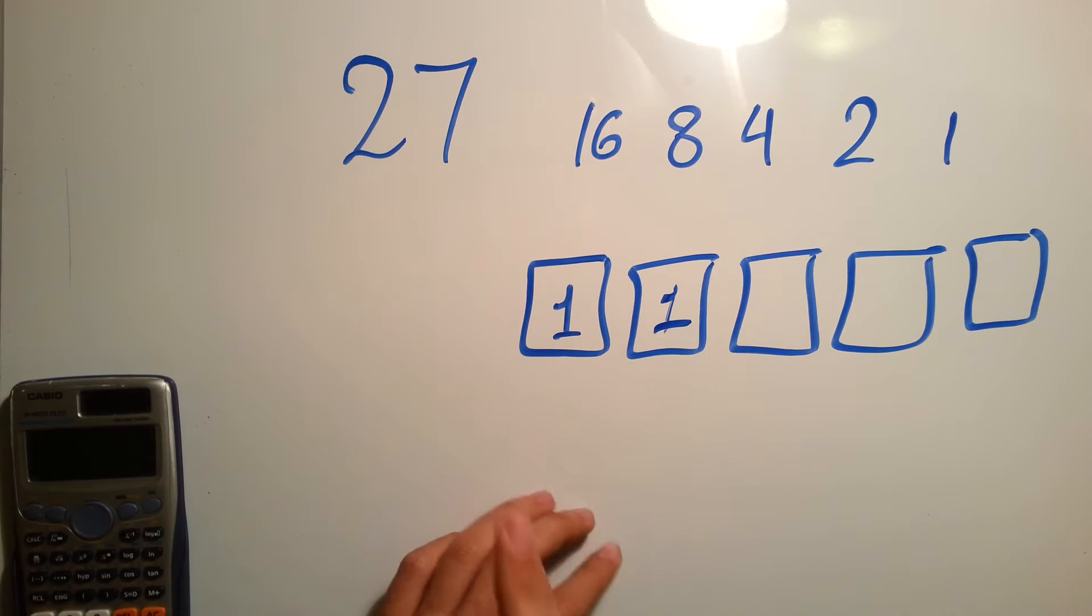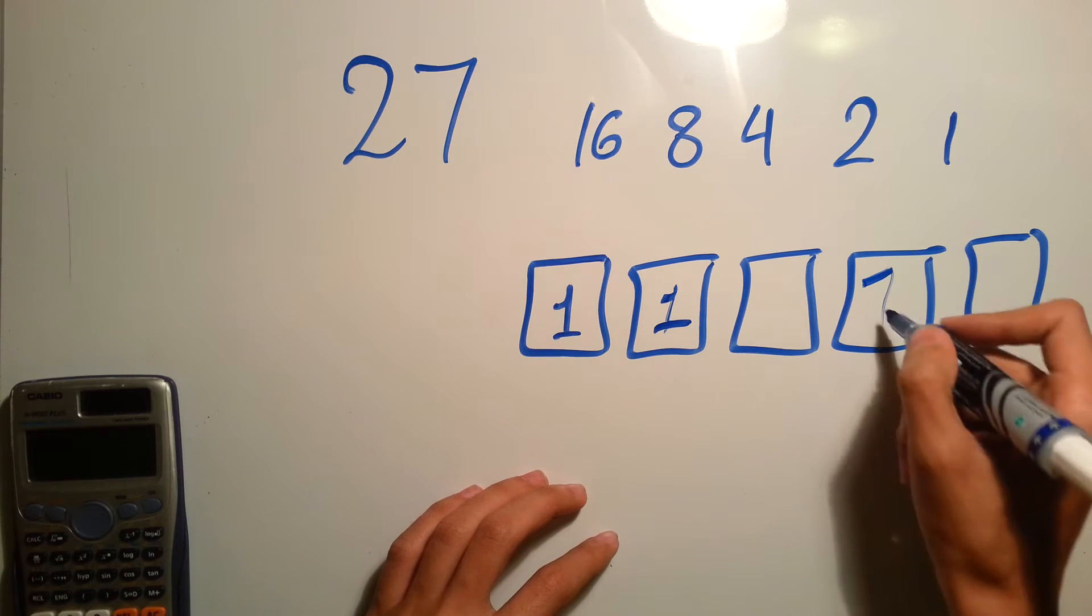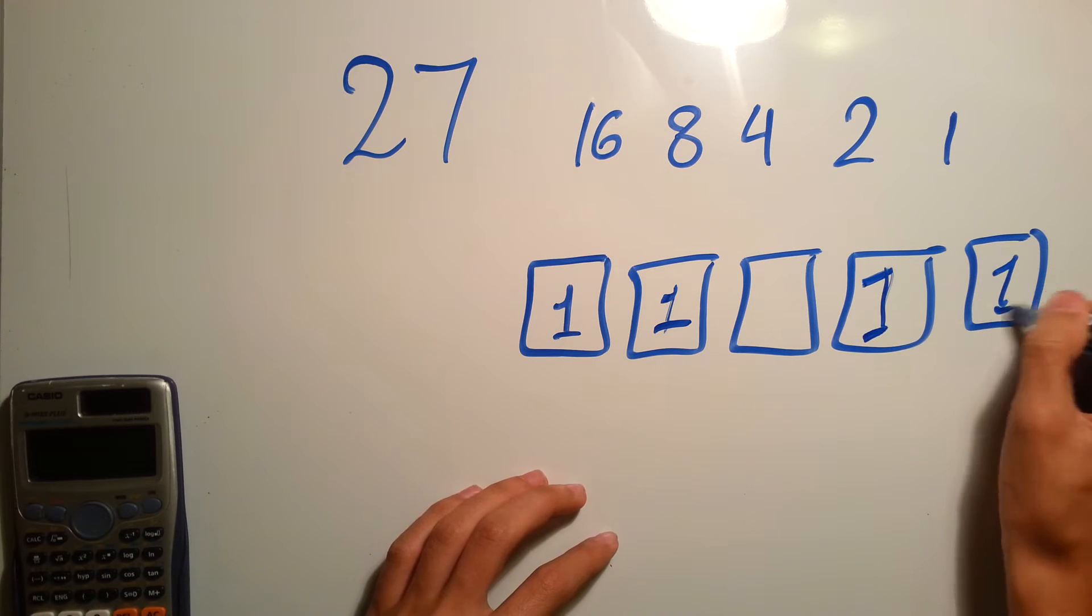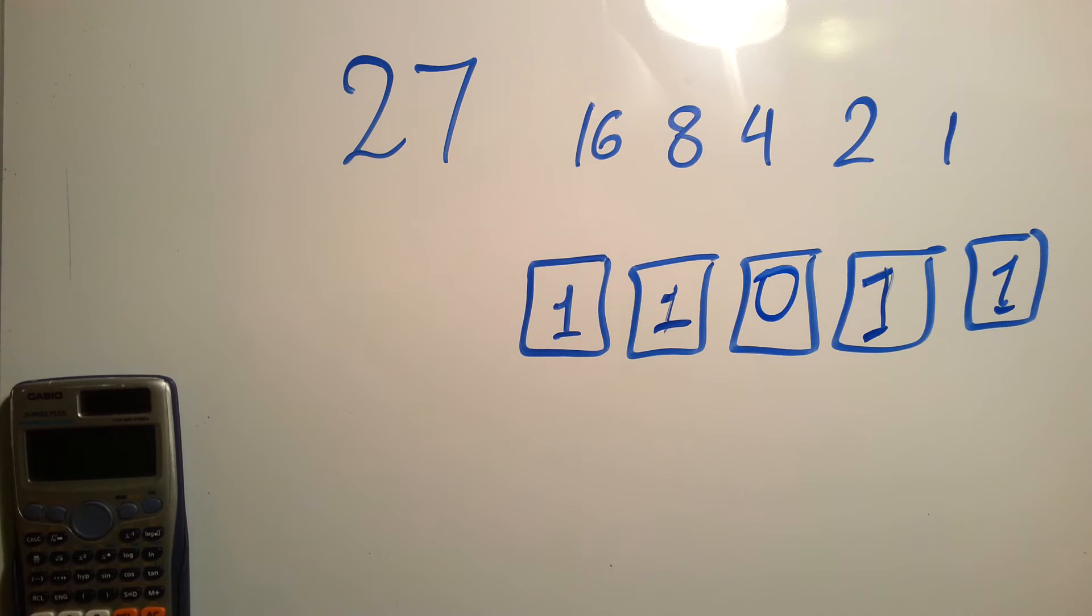So now we're having 24, so it remains only three numbers to reach the 27. So you directly know that you'll use the 2 and the 1, and this one would be zero. This is a quick way that you can do it in your mind.